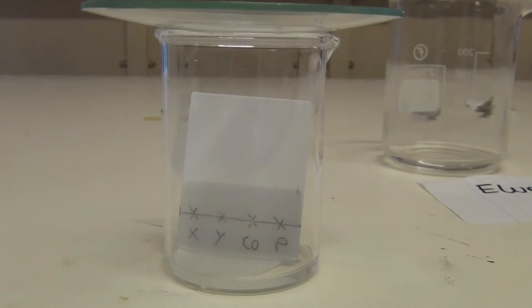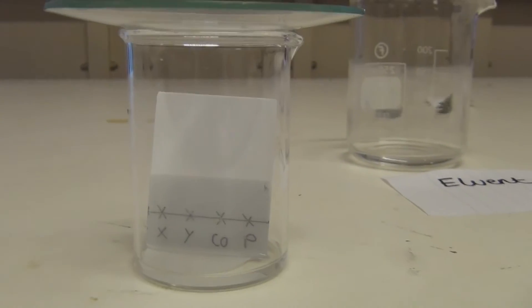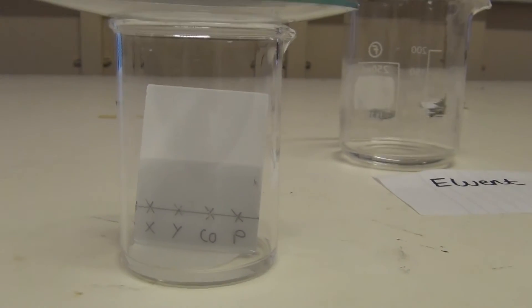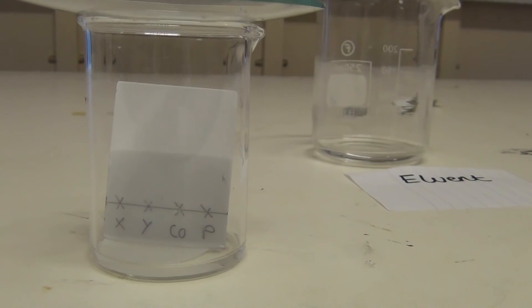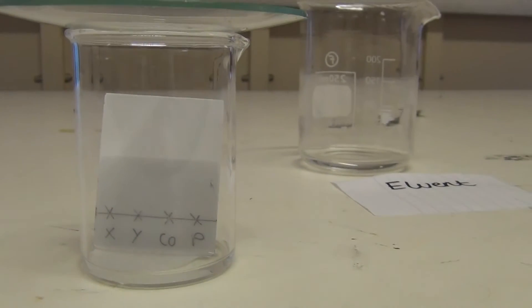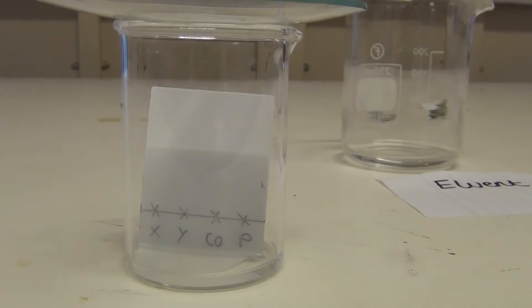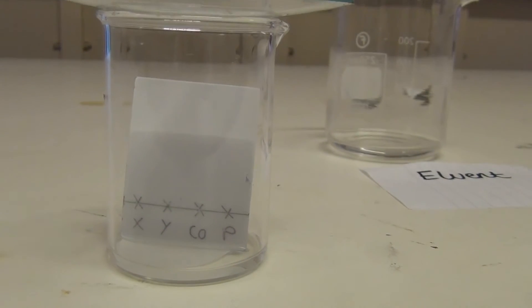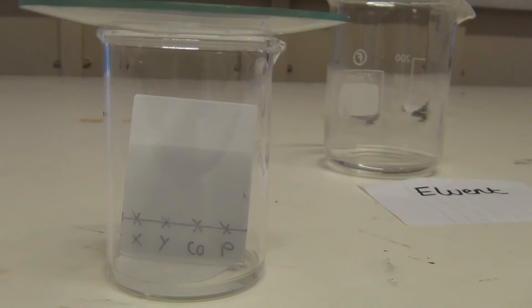TLC works by exploiting the different degrees to which different compounds interact with the stationary phase, as they pass over or through this phase as part of the mobile phase. In TLC, the stationary phase is the silica-coated TLC plate, which you can see in front of you. The mobile phase is the solvent which the TLC plate is placed into and is what causes the compounds to run up the plate.